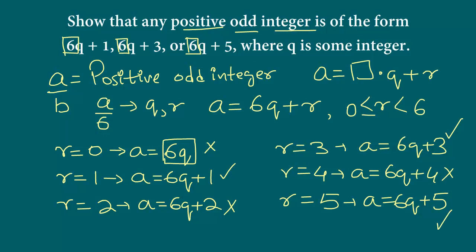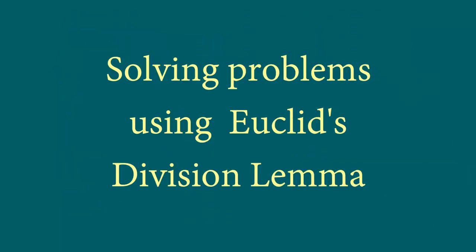So we see that there are exactly 3 values that work. A can be 6q plus 1, 6q plus 3, or 6q plus 5 — which is exactly what we needed to show. This is how we solve these types of questions using Euclid's division lemma. If you like the video and want to receive more videos, please subscribe to my channel and click the bell icon so you don't miss out on new uploads.